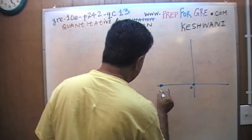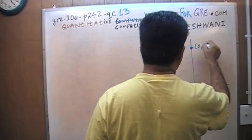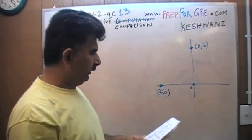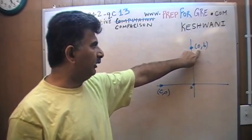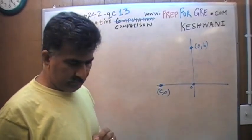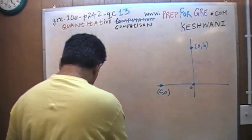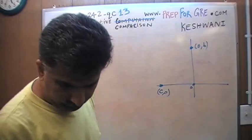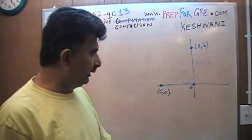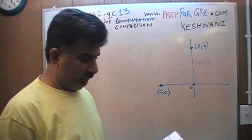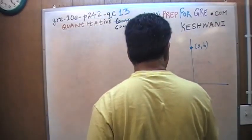Let's take a look at it. They give you a little picture here, so let me reproduce it. This is your origin. Here's the point C and 0. Here's the point 0 and B. Y coordinate is B, X coordinate is 0. There's another point and then we have a line that goes through that.